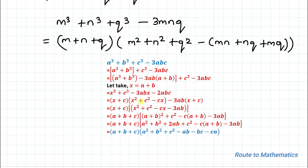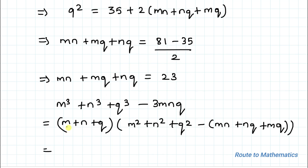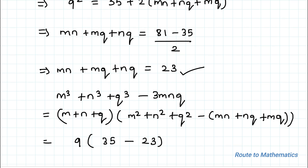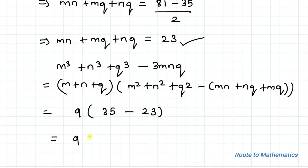Using the identity, M cubed plus N cubed plus Q cubed minus 3MNQ equals the quantity M plus N plus Q, multiplied by M squared plus N squared plus Q squared minus MN minus MQ minus NQ. From equation 1 we have 9, from equation 2 we have 35, and MN plus MQ plus NQ equals 23, so the bracket becomes 35 minus 23 equals 12. Therefore, 9 multiplied by 12 equals 108 is our answer. I hope you have understood the solution. Thanks for watching — please subscribe to my channel and hit the like button for more such interesting videos. Thank you.